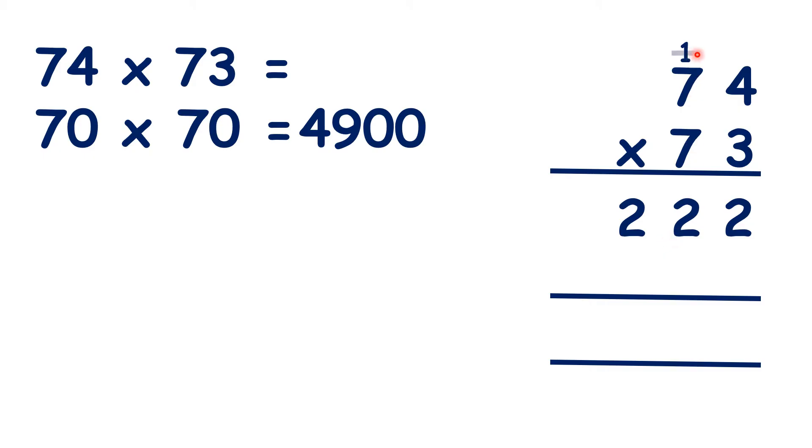Now, we cross out our working, write a zero in our units, and now we have 4 times 7, which is 28, and 7 times 7 is 49, plus 2 is 51.